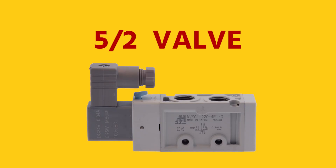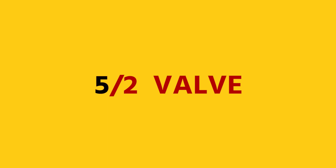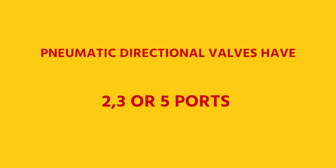Directional valves are appointed with two numbers. The first number shows how many ports the valve has and the second number the amount of states. Directional valves usually have two, three, or five ports.